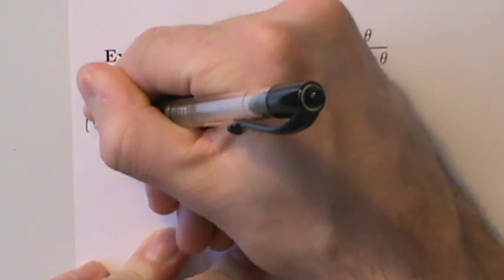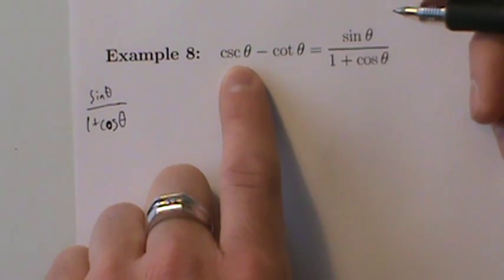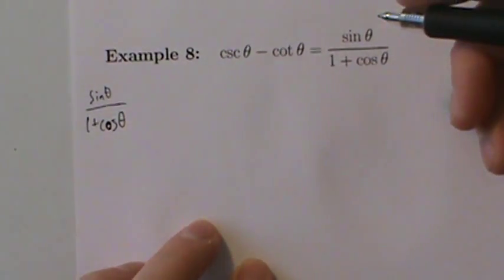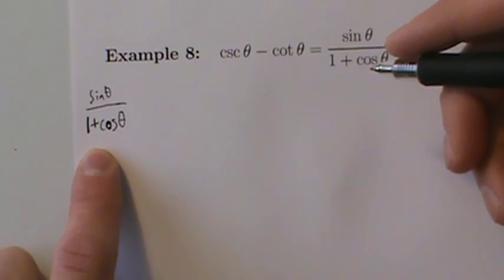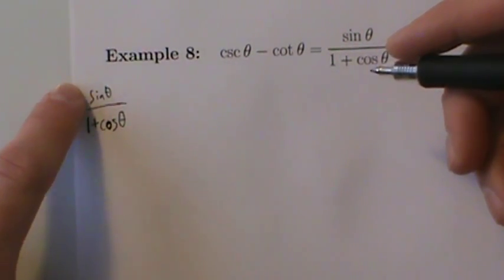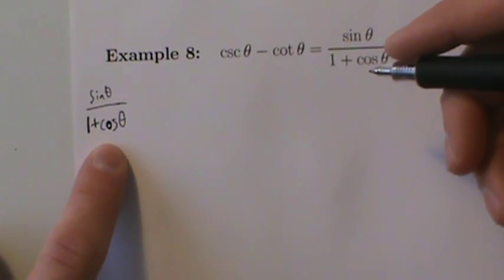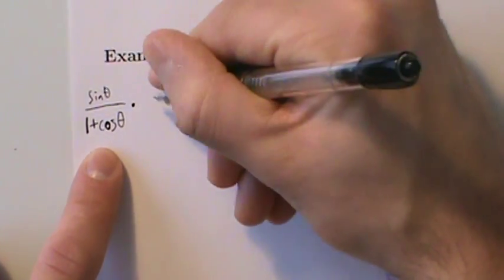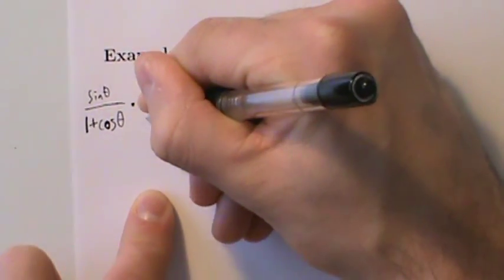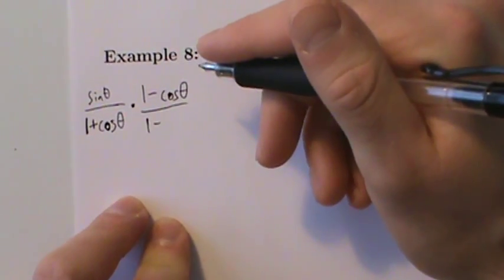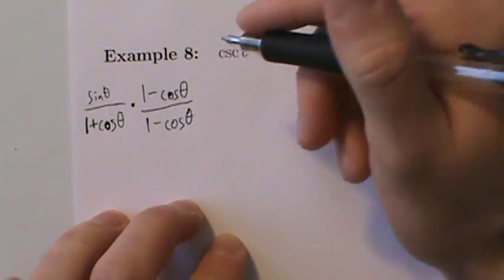Starting with the right side: sine of theta divided by 1 plus cosine of theta. We want to show it equals cosecant of theta minus cotangent of theta. When you have something on top and the denominator has something plus a trig function, you can try multiplying the top and bottom by that same something minus that trig function.